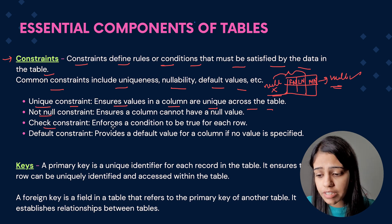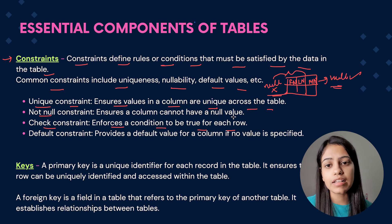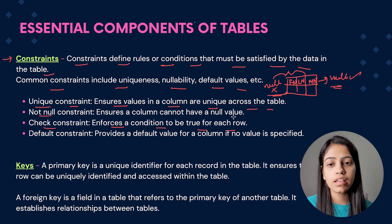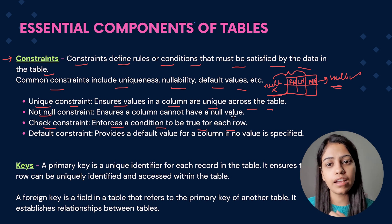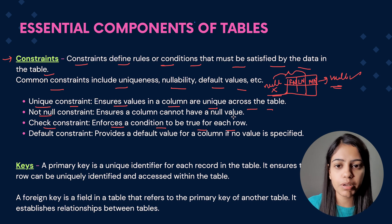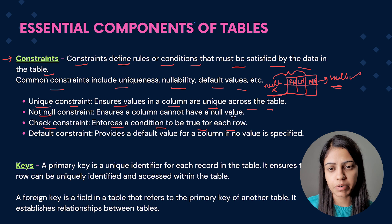The third one is the check constraint, which enforces a condition to be true for each row. For example, consider a voter ID — it can only be made when a person is over 18 years old. So there would be a check on the birth date: if the person is over 18 years, only then can we make the voter ID; otherwise we cannot.